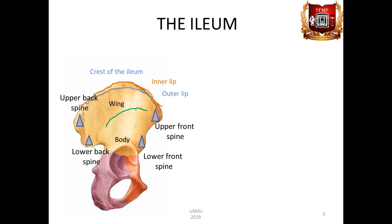The anterior gluteal line, linea glutea anterior, is the longest one. It begins near the superior anterior iliac spine and arches towards the large sciatic notch. The posterior gluteal line, linea glutea posterior, is located from behind the wing and is vertical. The lower gluteal line, linea glutea inferior, is located above the acetabulum.